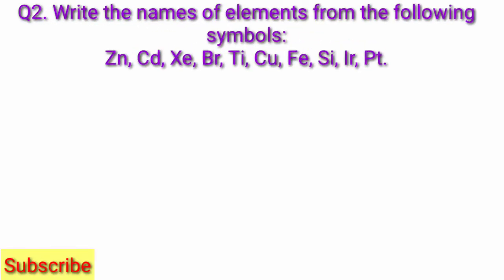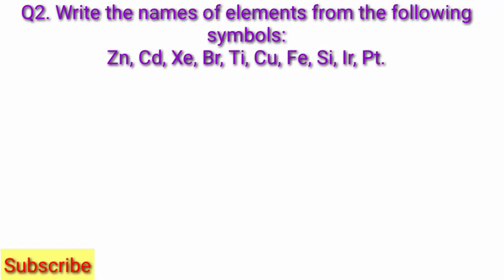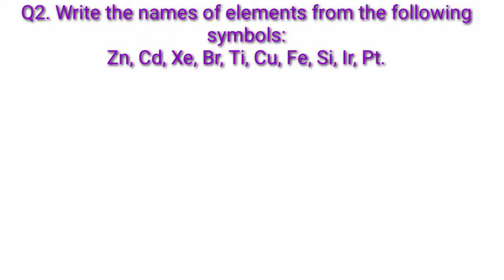Question 2: Write the names of elements from the following symbols. Zn, Cd, Xe, Br, Ti, Cu, Fe, Si, Ir, Pt. Answer.